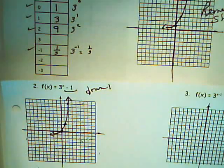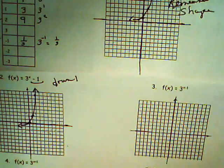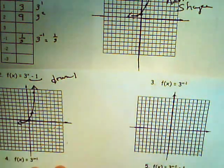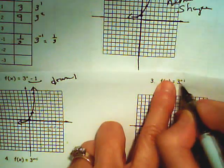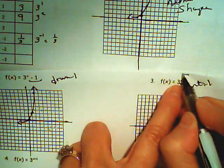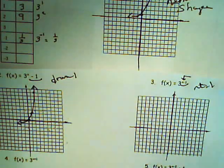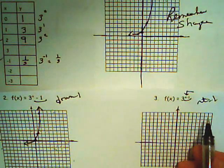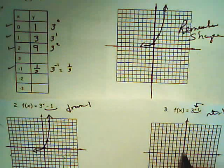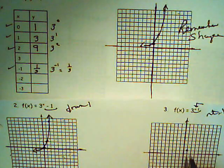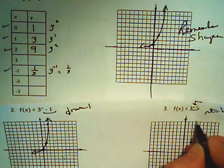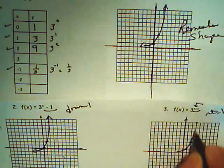In each of these problems, you'll be recognizing how the graph has shifted. My next problem is 3 to the x minus 2. A number on the end shifts vertically, but this problem — with the minus 2 with x — is going to shift right one unit. Remember, opposite that sign means right or left. So I'm going to take my points from problem 1 and shift right one unit: (0,1) shifts right, (1,3) shifts right one, (2,9) shifts right one. Remember the shape? There's your problem.